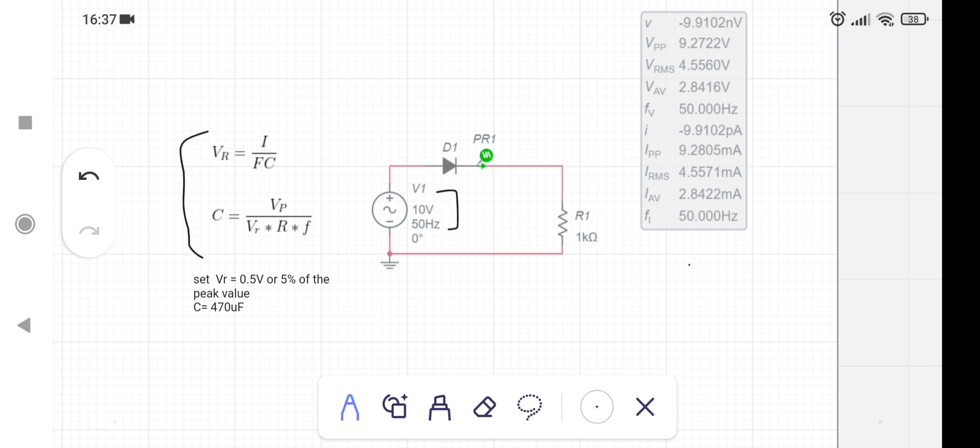VR is the ripple voltage, I is the current through the load, and F is the frequency which is equal to 50 Hertz. Capacitor value C = I / (F × VR). With the help of this we can calculate ripple voltage.